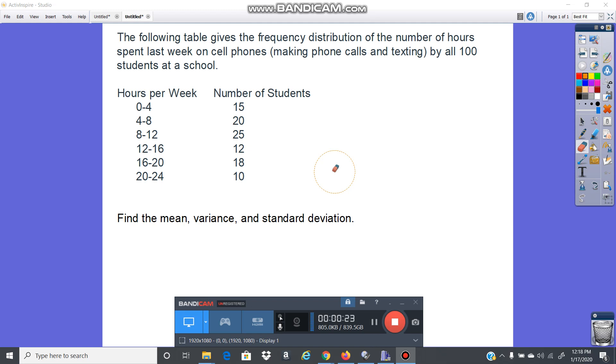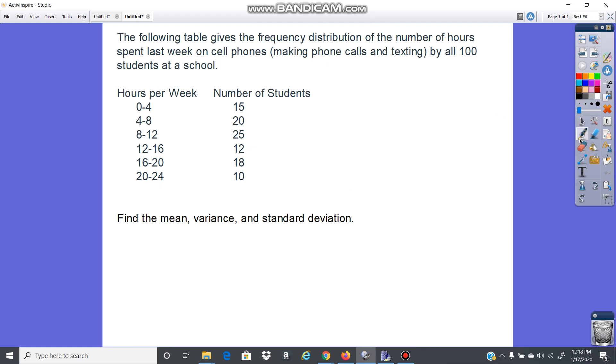The first thing you need to determine is this a population or a sample. When I'm looking at this data here, I'm going to look at where our data is given. We are given by all 100 students at a school. So that key word there, all, that's a population. That's everyone at that school.